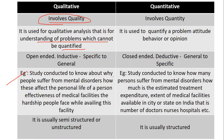For example, a study conducted to know why people suffer from mental disorders, how this affects the personal life of a person, effectiveness of medical facilities, and the hardships they face while availing these facilities — this is a qualitative approach. The same example from a quantitative perspective would focus on the estimated time for treatment and the extent of available facilities to cure patients. In qualitative research, it is a semi-structured or unstructured approach, whereas in quantitative research, it is a structured approach.